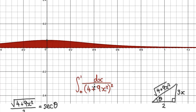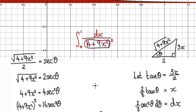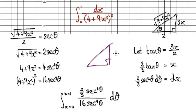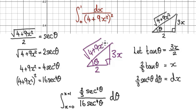Start out by looking at this bit here and create a right-angled triangle in such a way that this will be true. If you make your right-angled triangle to have 3x here and then 2 as the adjacent, then the hypotenuse will have no choice but to be √(4 + 9x²).